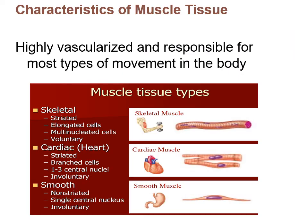Now moving to muscle tissue. Muscle tissue is highly vascularized with a great blood supply, and is responsible for most types of movement in the body. There are three different types: skeletal muscle, cardiac muscle, and smooth muscle. Skeletal muscle is involved with movements of different body parts. Cardiac muscle is the heart. Smooth muscle lines most hollow organs and is involved with their movement and support, including large blood vessels.